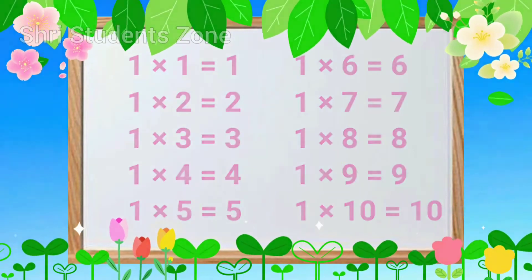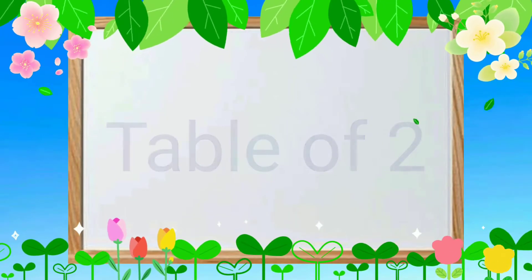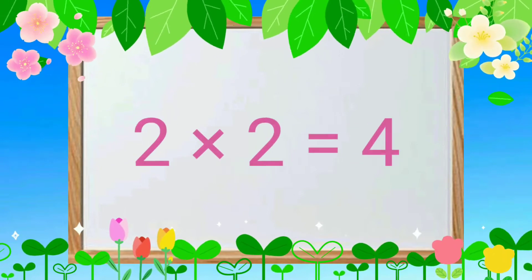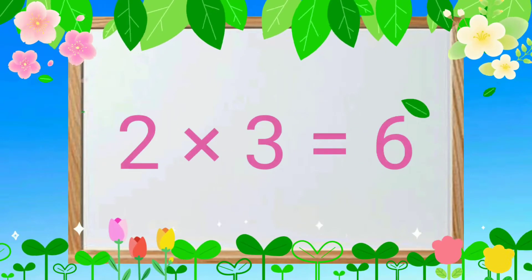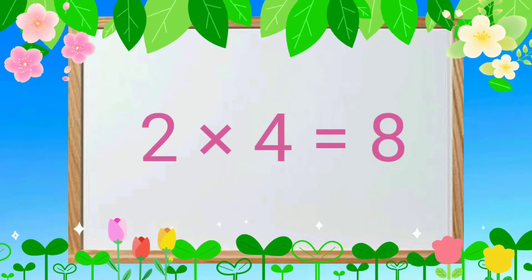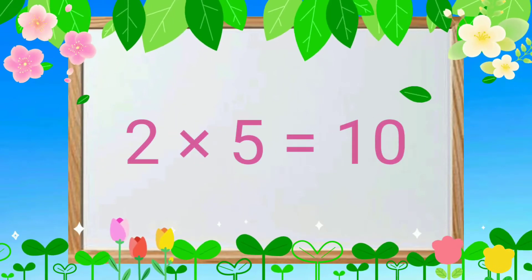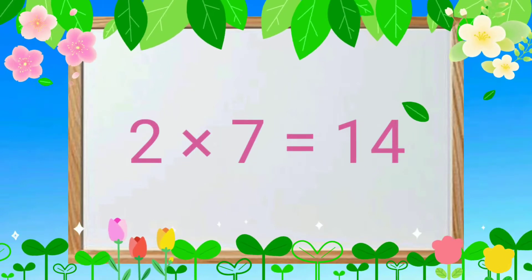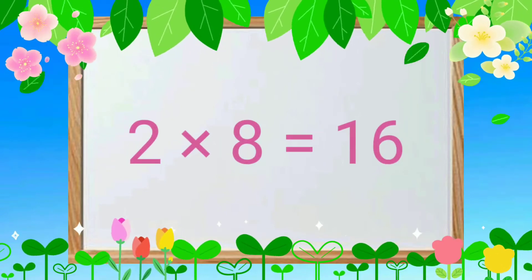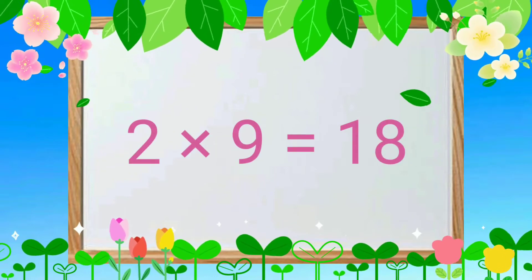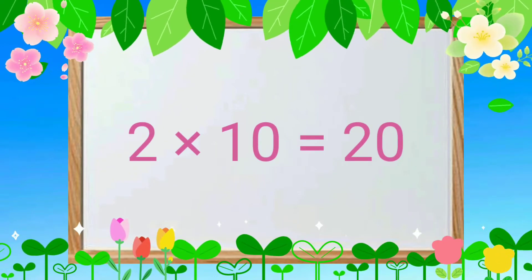Table of 2. 2 1s are 2, 2 2s are 4, 2 3s are 6, 2 4s are 8, 2 5s are 10, 2 6s are 12, 2 7s are 14, 2 8s are 16, 2 9s are 18, 2 10s are 20.